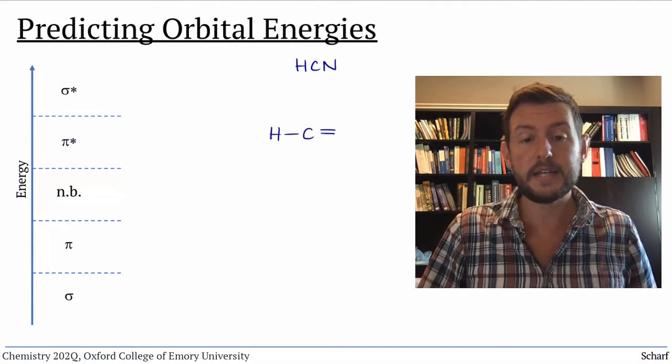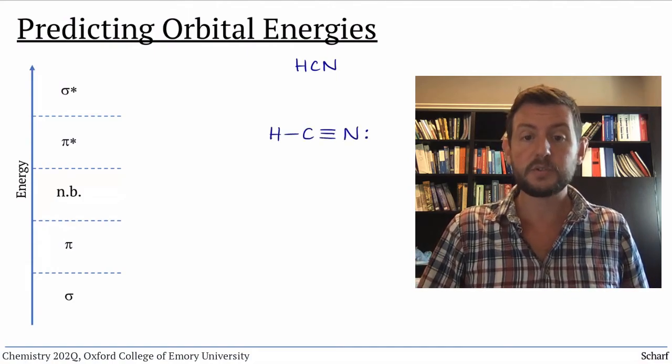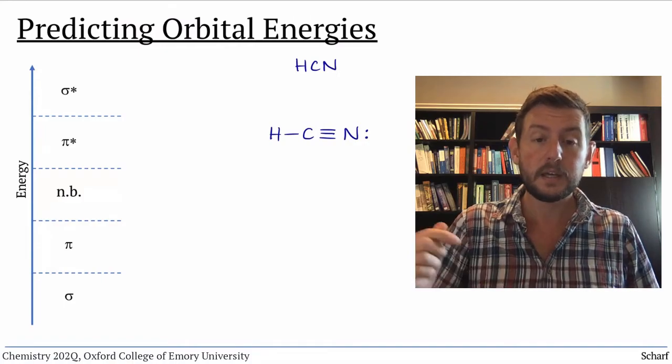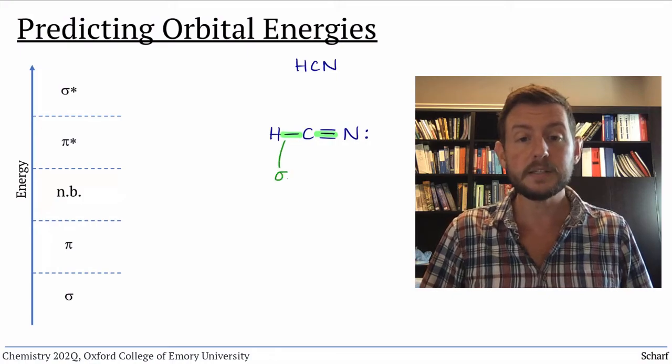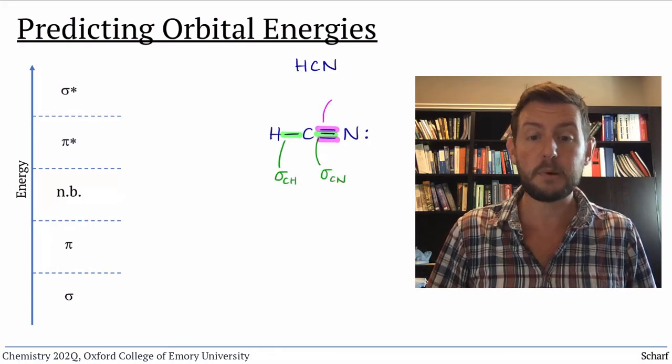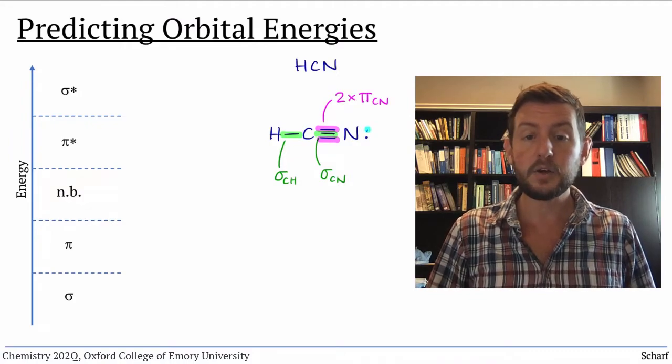The Lewis structure of HCN looks like this. First, we need to identify which types of orbitals we have. Here we have two sigma bonds, CH and CN, two pi bonds, both CN, and a lone pair on nitrogen.